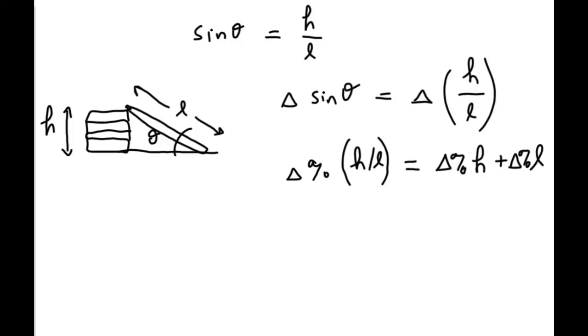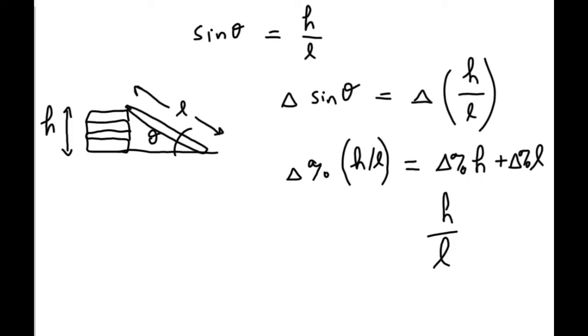So, if you take some value H, and you divide by some value L, then you add their percent uncertainties, like I've shown here. You add their percent uncertainties. The same rule applies whenever we are multiplying two measurements. If we multiply two measurements, we do the same thing here. We add the percentage uncertainties to propagate the uncertainty.